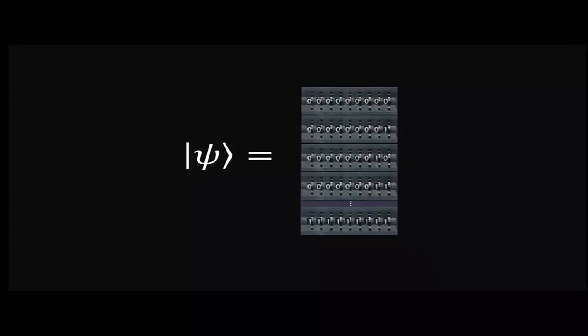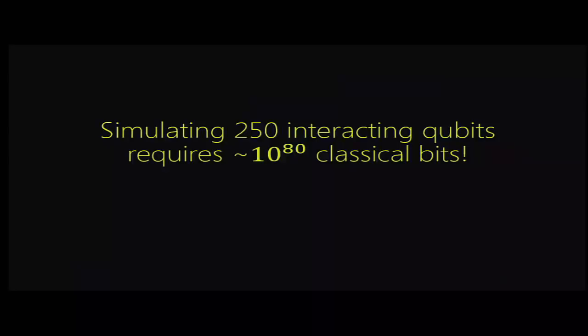But the real magic comes in that we can actually build a multi qubit state. This takes on a superposition of all of the numbers between zero and two to the n minus one. Here we have nine qubits. In a nine qubit state, we store zero and one and two and three, all the way up. All of these numbers are stored simultaneously in this nine qubit state. And this is where you start to get some of this parallelism. Of course, 250 interacting qubits, to store that would require 10 to the 80 classical bits. You can begin to get a feeling for how powerful this is. n interacting qubits would take two to the n classical bits of information to store.